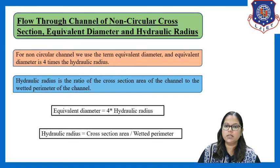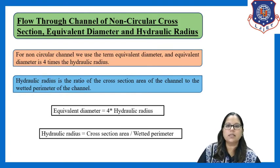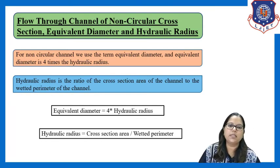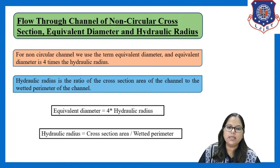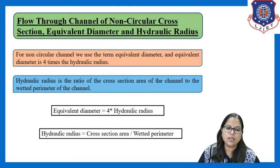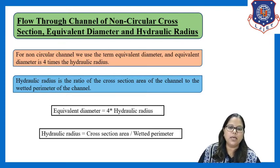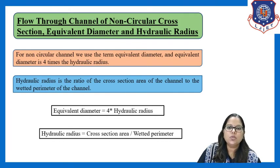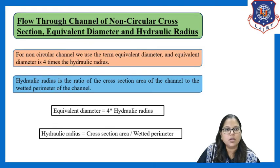The next topic is flow through channels of non-circular cross section, and equivalent diameter and hydraulic radius. For non-circular channels, we use the term equivalent diameter, which equals 4 times the hydraulic radius. Hydraulic radius is the ratio of the cross-sectional area of the channel to the wetted perimeter.